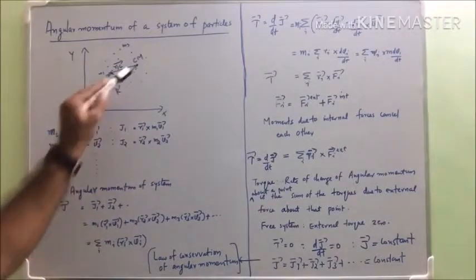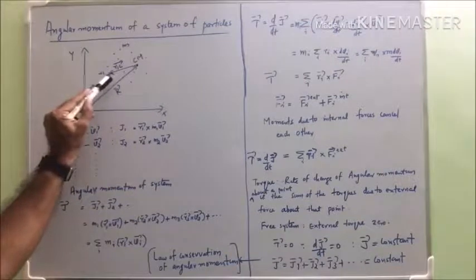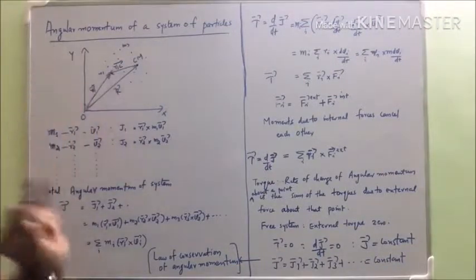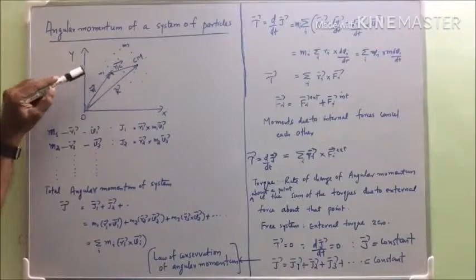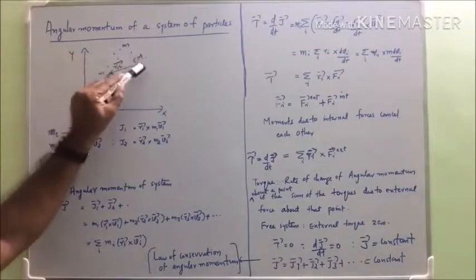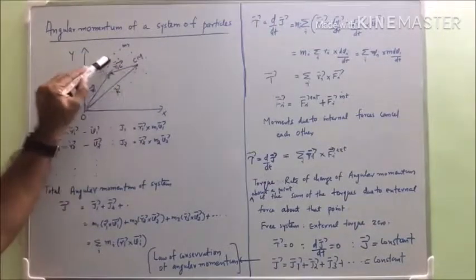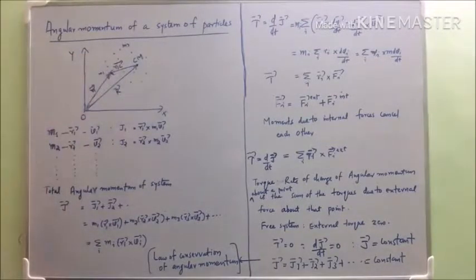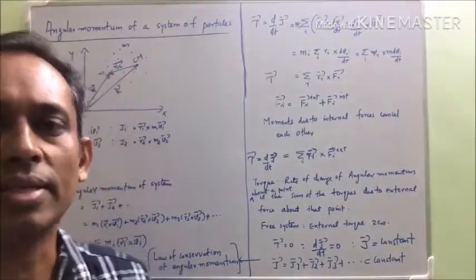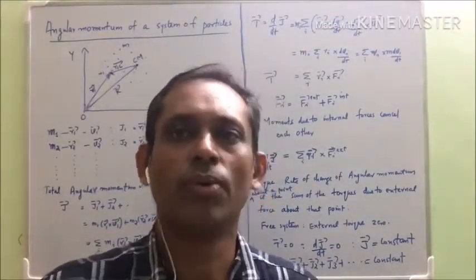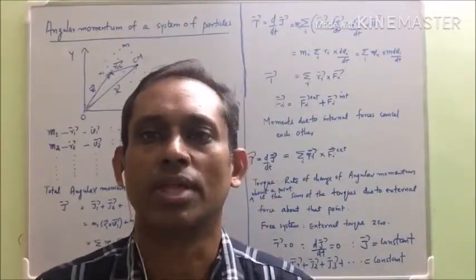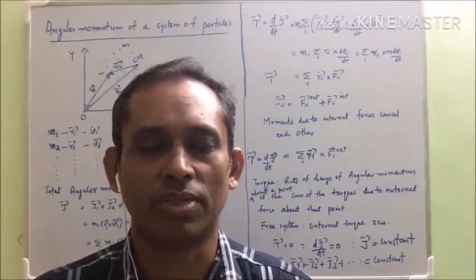With respect to the center of mass, the position vector of the first particle is r1c. With respect to O, its position vector is r1, and with respect to the center of mass, it is r1c. In the same way, you can have the position vectors with respect to point O and with respect to the center of mass of the system.